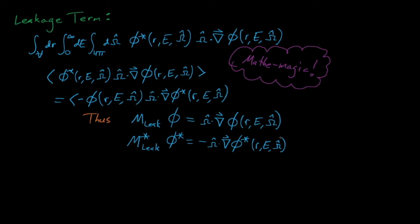Conceptually, for the forward Boltzmann transport equation, the leakage operator describes how neutrons will tend to diffuse away from areas of high neutron concentrations and into areas of low neutron concentrations. Because of this added negative sign, the reverse happens here. The adjoint leakage operator states that a neutron's importance will tend to diffuse away from regions of low importance and accumulate into regions of high importance. This makes sense because low-importance neutrons will tend to be eliminated from the system, whereas neutrons in higher-importance regions will have a greater chance of causing fissions and thus continuing the chain reaction.